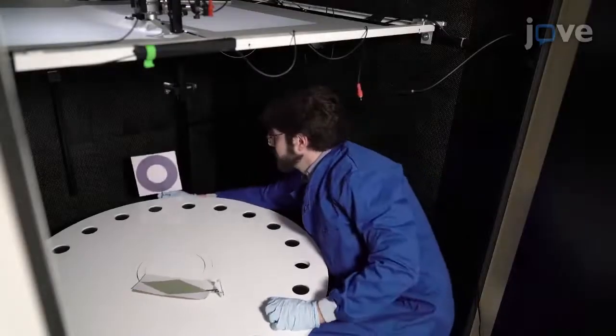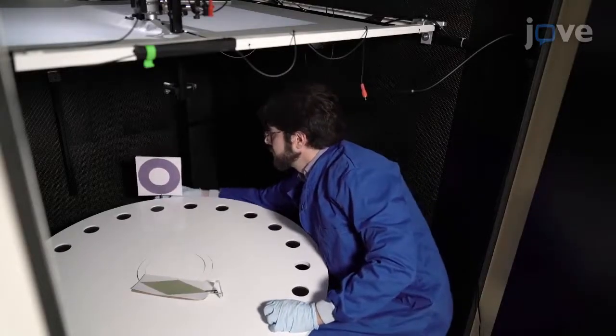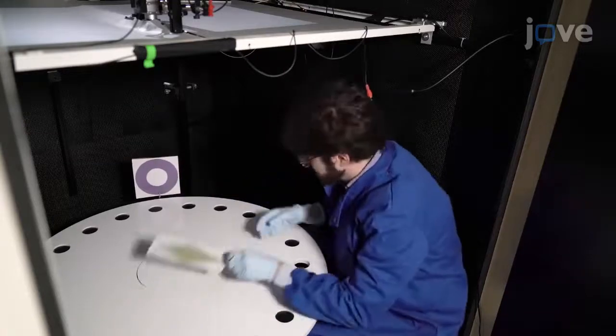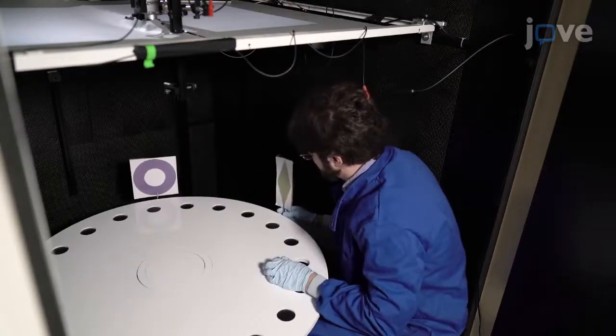Begin by attaching visual cues to the periphery of the platform, which should be at least two centimeters away from the edge to prevent mice from reaching them.